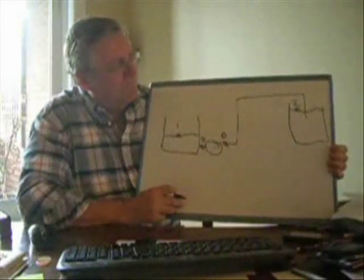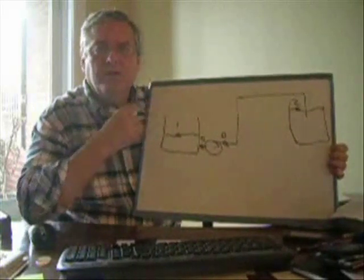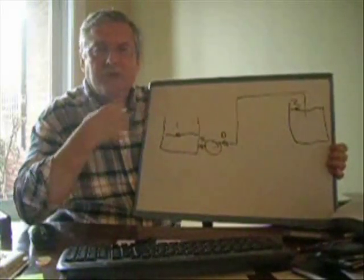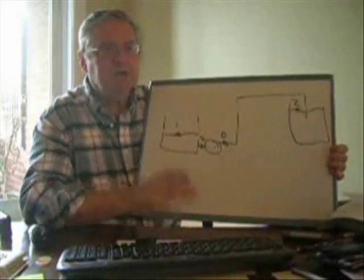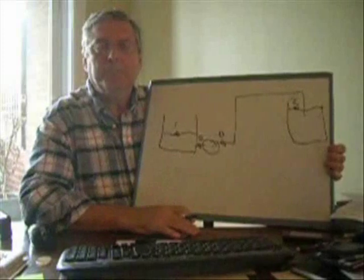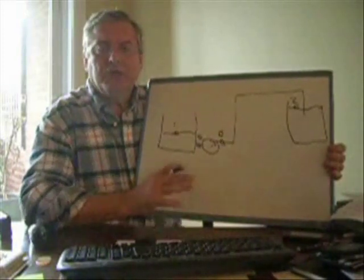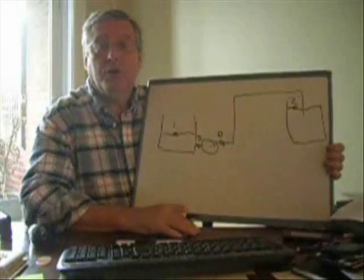Now, the first thing we have to determine is what flow rate do we need, and this is something that you as the designer need to know, need to establish. If it's in a house, well, you need flow rates of five to ten gallons a minute, depending on the application that you're thinking of and how much in a hurry you are, frankly.